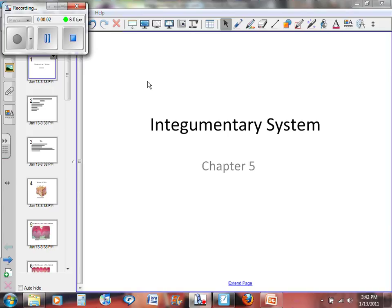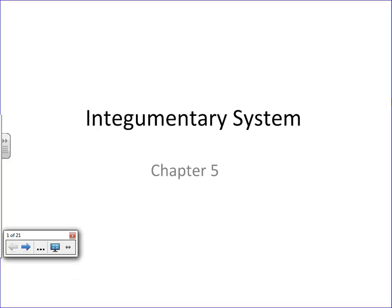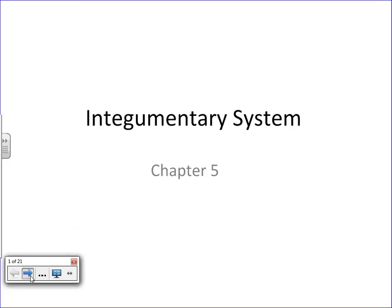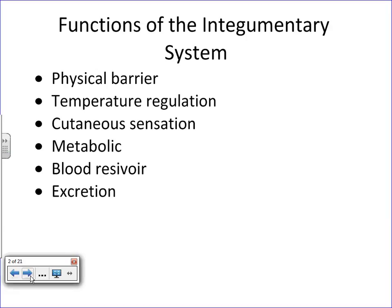Chapter five is devoted to the integumentary system. When we say integument, we're referring to skin. A couple of fun facts: skin is the largest organ of the human body, and by definition an organ is a structure composed of two or more tissues. As we'll see, there are lots of different tissues and structures within the skin that make it a quite diverse organ.